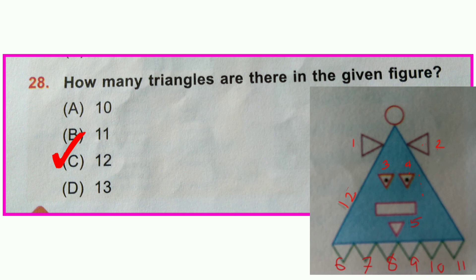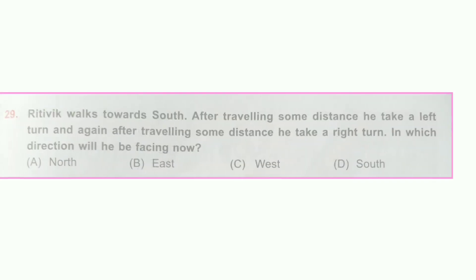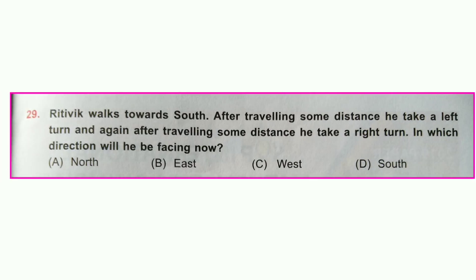Question number twenty-eight: How many triangles are there in the given figure? Option C is correct — there are 12 triangles in the given figure.